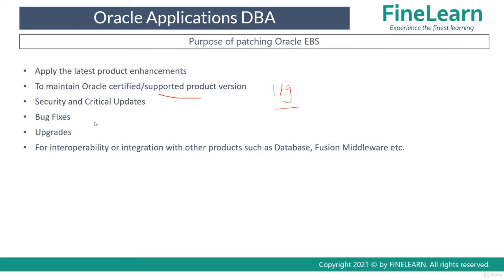Then there are one-off bug fixes, which are very common in any application, not only Oracle. Oracle eBusiness Suite may also require one-off bug fixes. For example, the technical or functional team might report they are unable to work on a specific form, or a report is having issues. When you check Oracle Support at support.oracle.com, you might find that a specific bug can be fixed by applying a one-off patch.